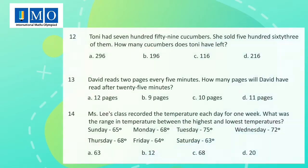Question 12: Tony had 759 cucumbers. She sold 563 of them. How many cucumbers does Tony have left?